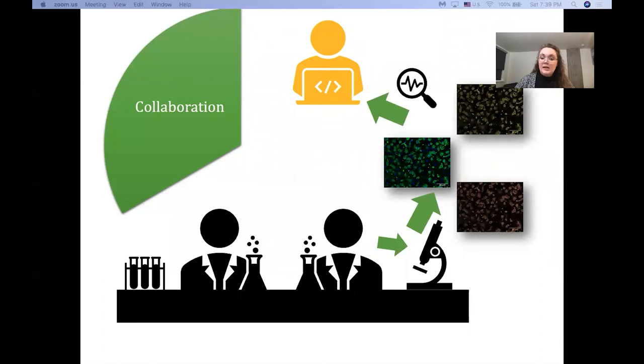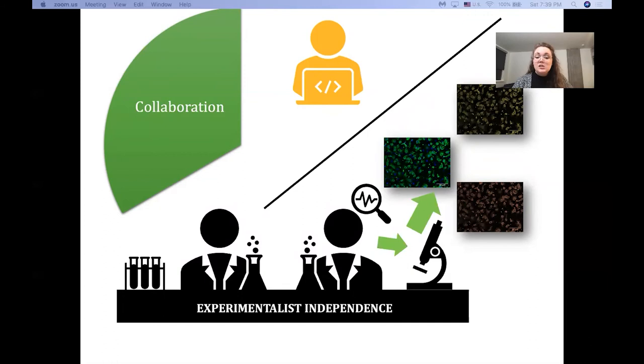But what's important in order to be efficient about our time is that our experimentalists cannot always be dependent upon our data scientists for their analysis. We need to have a way that our experimentalists can actually take their images and perform their own analysis with our pipeline, leading to experimental independence and freeing up data science time for feature edition.